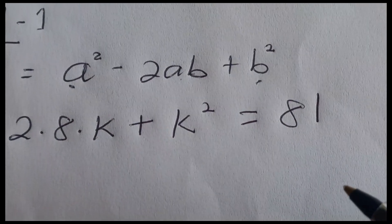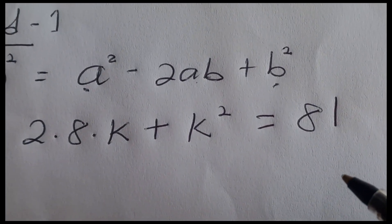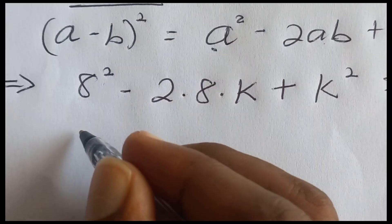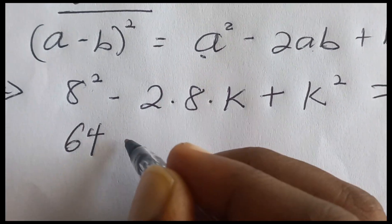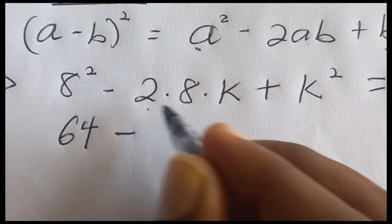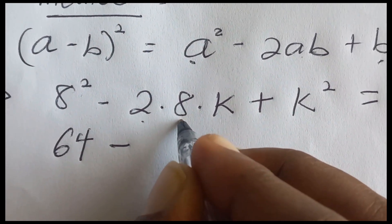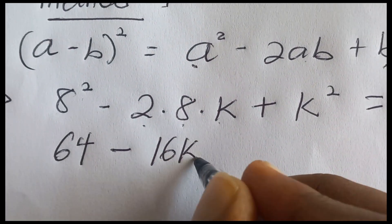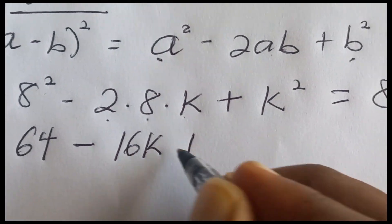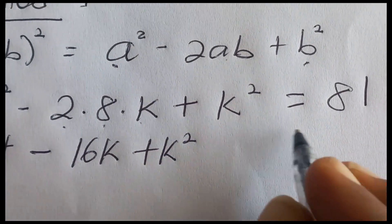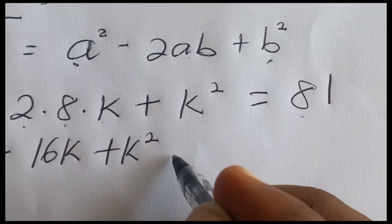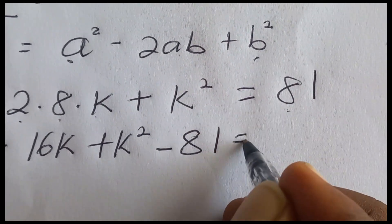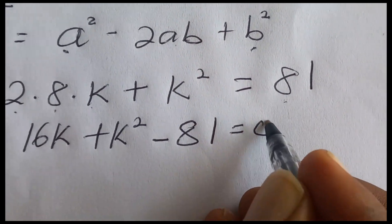So we are going to get 8 squared minus 2 multiplied by 8 multiplied by k plus k squared, equal to 81. Now 8 squared is 64, minus 2 times 8 gives 16, so we have 64 minus 16k plus k squared.